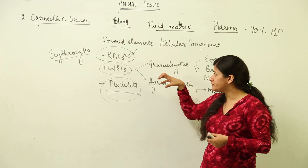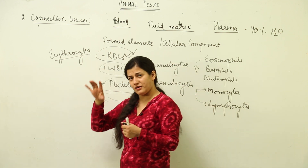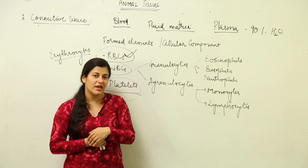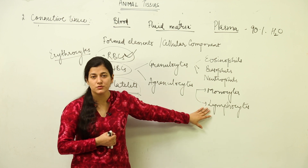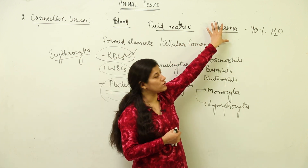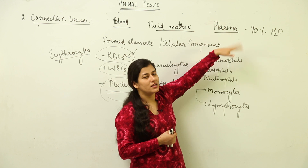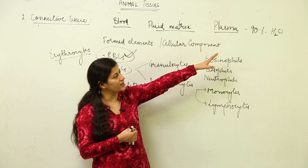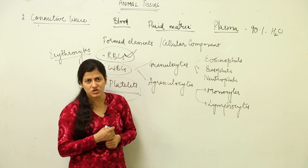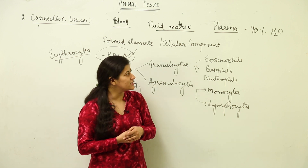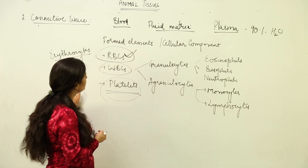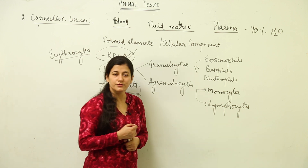When blood passes through capillaries, certain parts ooze out into the interstitial fluid, forming lymph. Lymph capillaries are present inside which lymphocytes go. The intercellular fluid is mostly plasma, which contains around 90–95% water, with albumin and other proteins, and certain ions. The cellular components include the three different types we discussed — and that is all about blood.